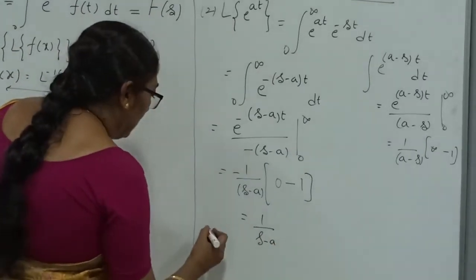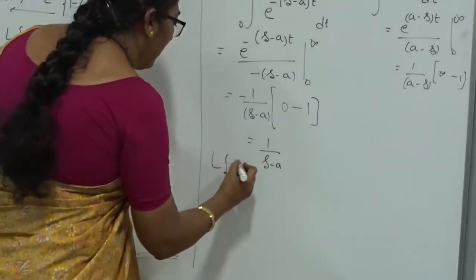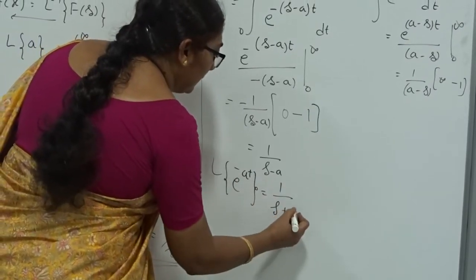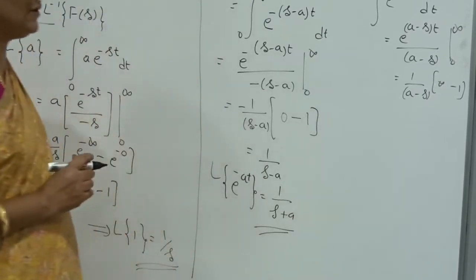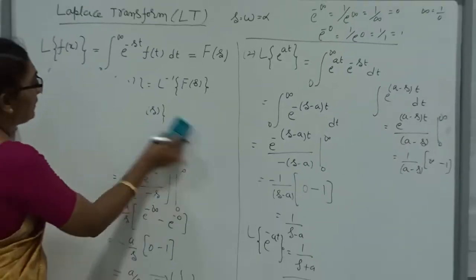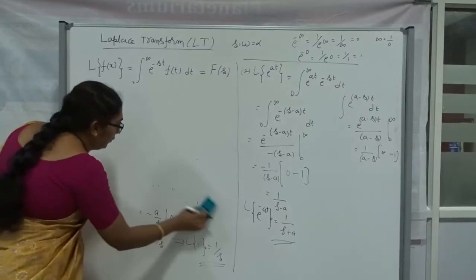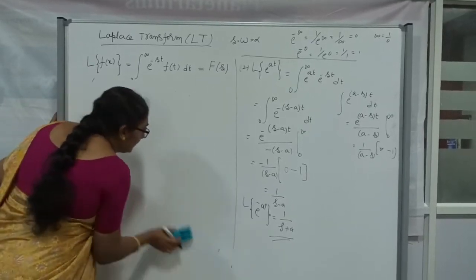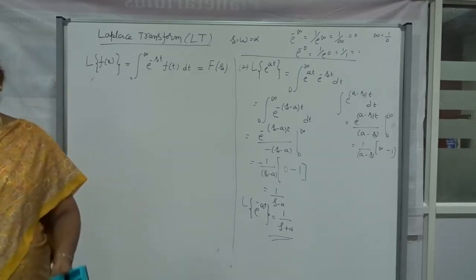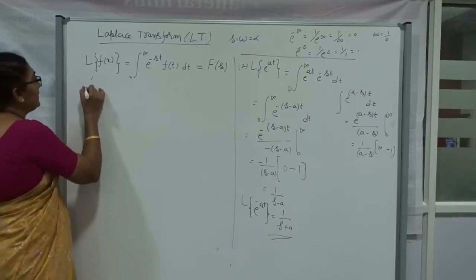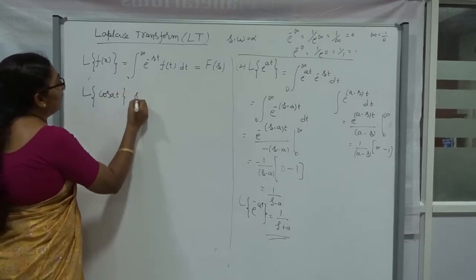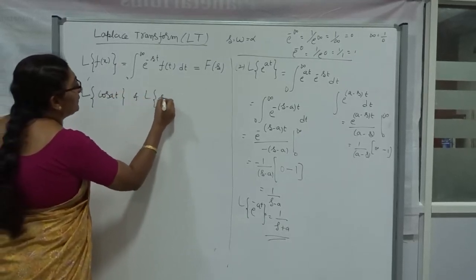Now, suppose the Laplace Transform of e^(−at) — instead of a, what we get is minus a, so we get 1/(s+a). These are the standard functions. Now I am going to take the next function, which is the trigonometric function. I will find the Laplace Transform of cos(bt) and also the Laplace Transform of sin(bt).